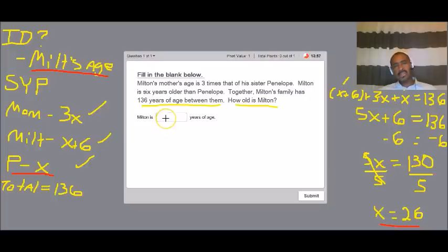And we know X is Penelope's age. So if we put 26 in this box, that answer is going to be wrong. So what we have to do is go to Milton's, which is X plus six.